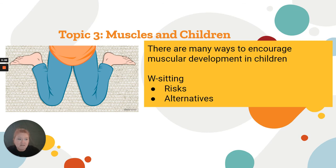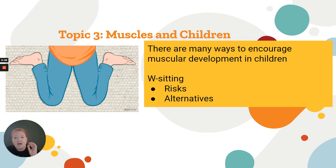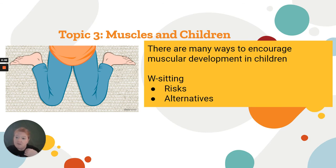Basically, children have to practice so many things. They're not going to be able to write or use scissors if they're never given the opportunity to do similar things. Yes, they will go slow, and yes, it can be messy, but we still show them how to do it. W-sitting is dangerous for many reasons — it can encourage dislocation of the ankle, knee, and hip joint, limit cross-body movements, and decrease core strength. Alternatives include crisscross applesauce, legs out in front, both legs to the side, on your knees, or sitting on a little chair or stool.